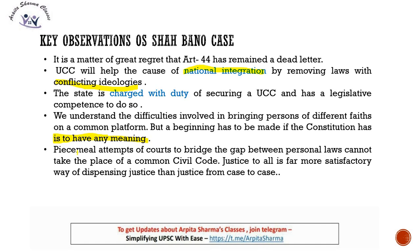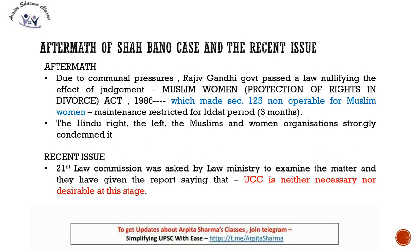The Supreme Court noted that while Shah Bano's case reached the Supreme Court and she was granted maintenance, many such cases never reach the courts and those women never receive maintenance. Piecemeal attempts — granting justice case by case — cannot take the place of a common civil code. The Court stated that justice to all through a uniform law is far more satisfactory than justice from case to case. Having a law applicable to all, under which every person can receive justice, is the better approach.